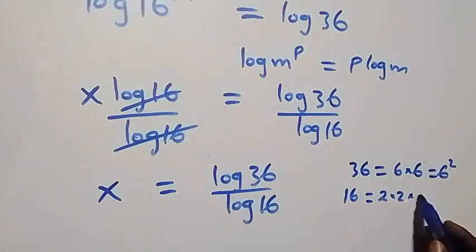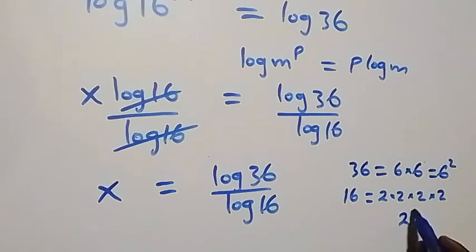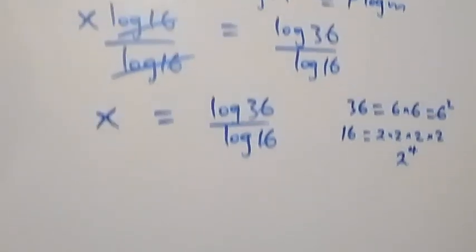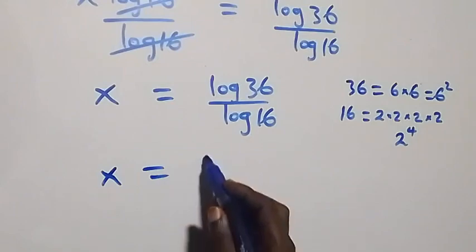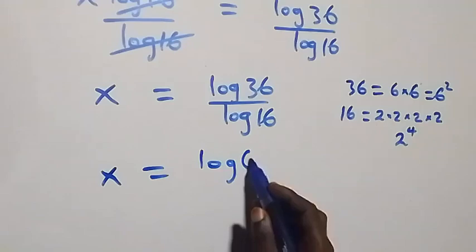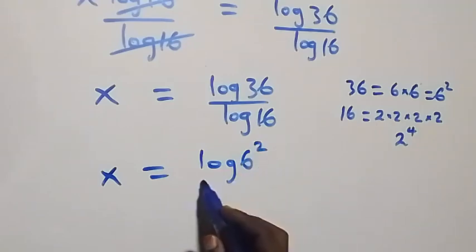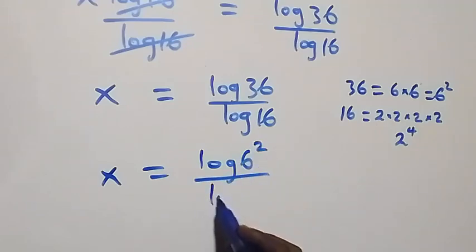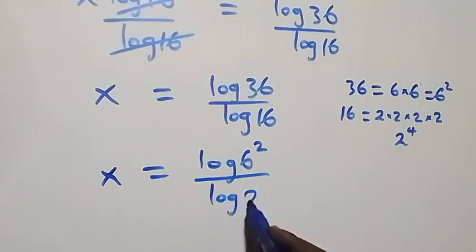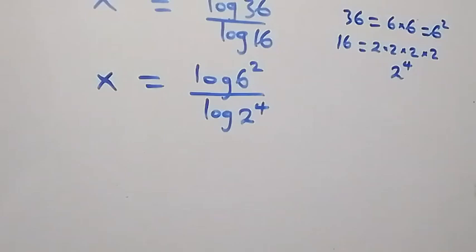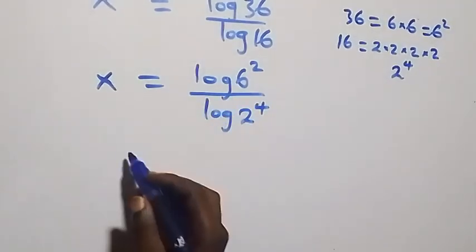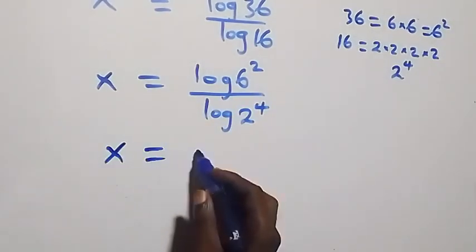And 16 can be written as 2 times 2 times 2 times 2, which is the same as 2 raised to power 4. Then what we have is x equals to log 6 squared over log 2 raised to power 4. We apply the power law of log, where the power is 2, so we have x equals to 2 log 6.